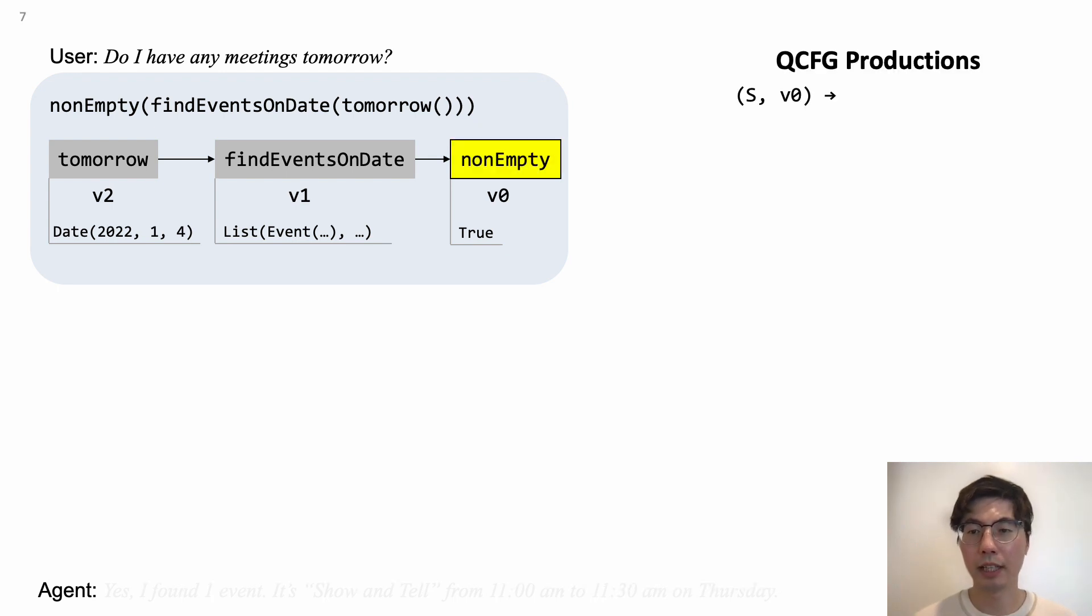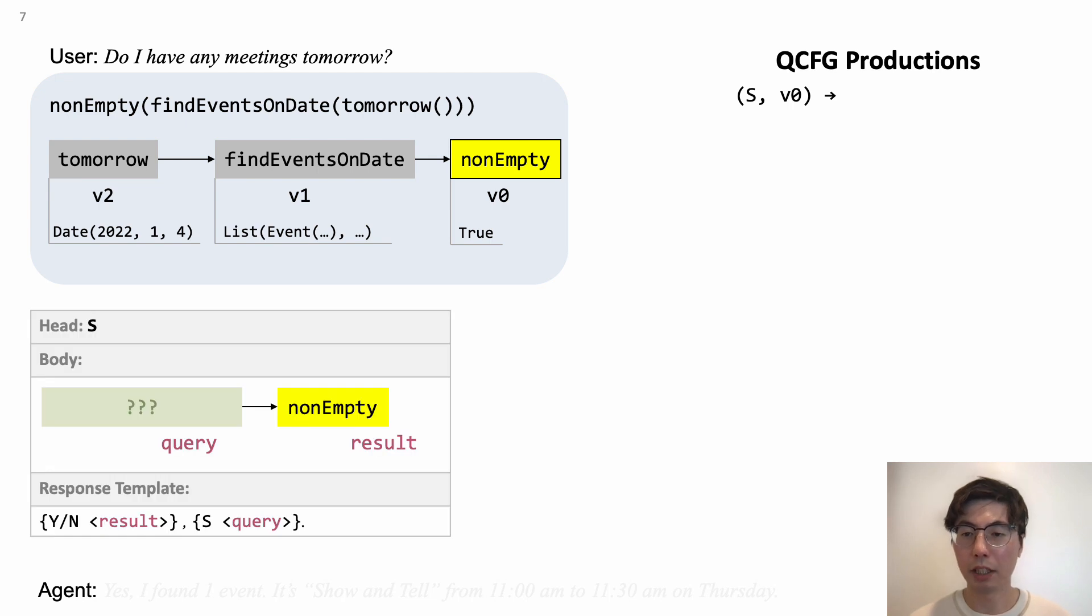To get the QCFG productions, we start with the non-terminal symbol SV0. It will expand into a stream that describes the computation of the node V0 using a sentence, that is, a phrase of syntactic type S. To expand this non-terminal, we find all transduction rules whose head is S and whose body can be successfully executed.